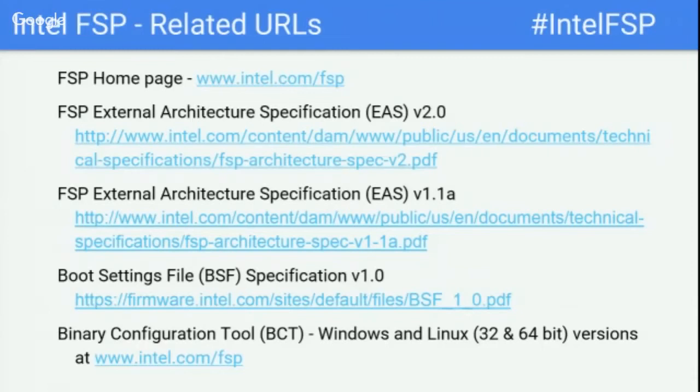Intel is also looking at cataloging debug messages to reduce FSP size. One negative side of debug FSP is larger size, which may not fit in a standard firmware layout. The plan is to use cataloging capabilities—encode messages during the build process and include a catalog schema file to decode them at the receiving end offline. This means in the release model, you can still have debug information without the size overhead.